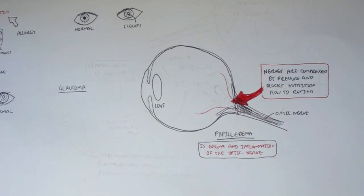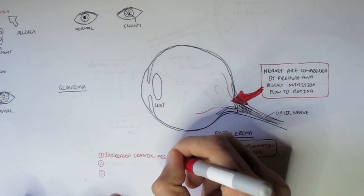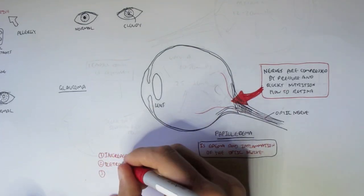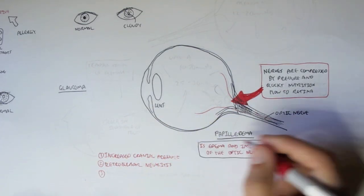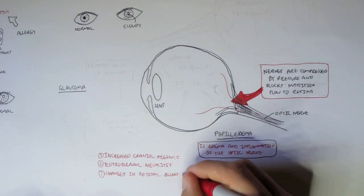Now, the causes of papilledema, there are three causes, I'd say. There's increased cranial pressure, which can cause it. A condition known as retrobulbar neuritis. And also changes in retinal blood pressure can cause papilledema.